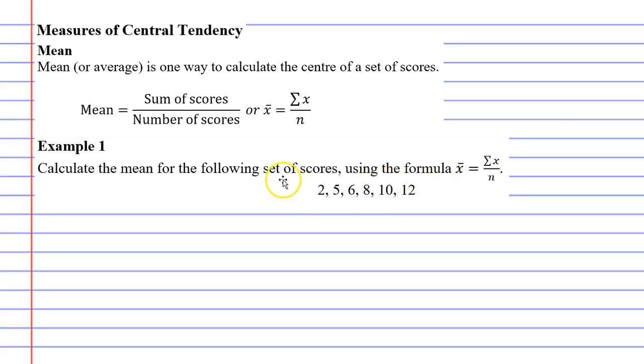But in this particular question, we want to do it using the formula, and it's important to know how this formula works. So the first thing I want to mention is you've got this symbol here. That's the sigma symbol, and in math that symbol means sum of. The x stands for scores.